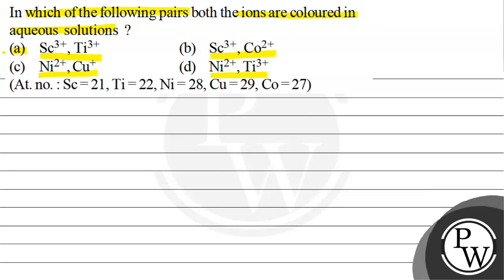Option D: Ni²⁺, Ti³⁺. Now the atomic number of scandium is 21, titanium is 22, nickel is 28, copper is 29, and cobalt is 27.